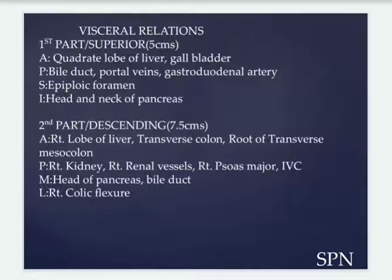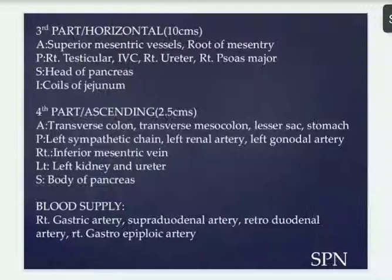The second part, D2, descending, is 7.5 centimeters long. Anteriorly: right lobe of liver, transverse colon, and root of transverse mesocolon. Posteriorly: right kidney, right renal vessels, right psoas major, and inferior vena cava. Medially: head of pancreas. Laterally: right colic flexure.